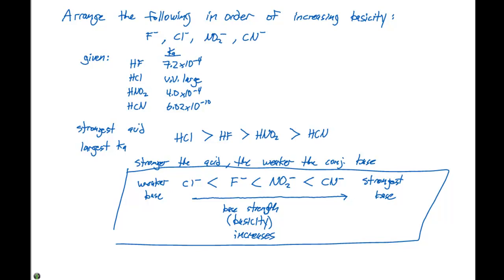We can do this by first looking at the Ka values to determine which acids are strongest. Using the principle that stronger acids have weaker conjugate bases, we can rank all the conjugate bases from weakest to strongest.